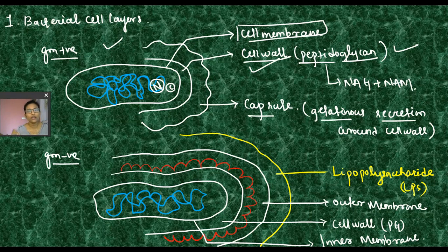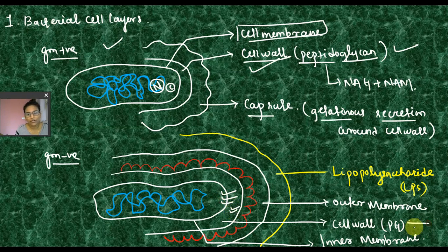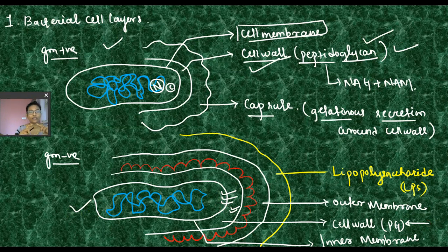If we have gram-negative bacteria, they will have a cell membrane. We also have peptidoglycan in negative bacteria. Both positive and negative bacteria have peptidoglycan — so what is the difference? In positive bacteria, the thickness of peptidoglycan is very big, while in negative bacteria, peptidoglycan is very thin.